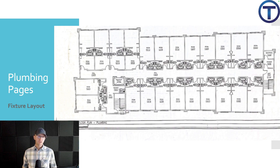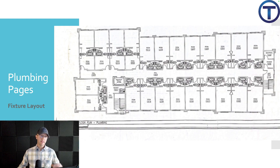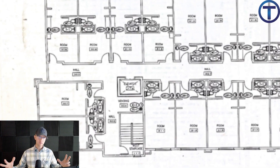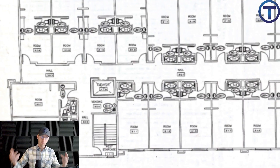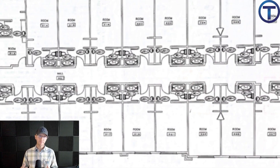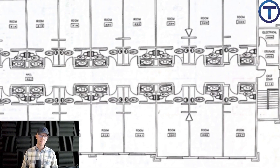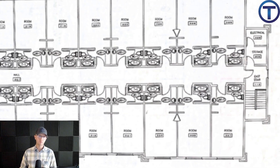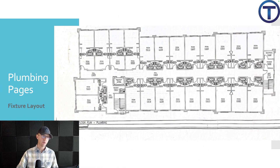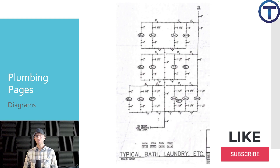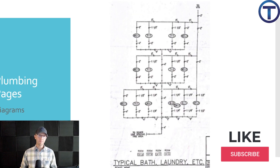Here we have a fixture layout page of a plumbing plan from a hotel. It gives you the layout of the room — a plan view like you'd see on architectural pages — but they've pulled off all the measurements. What they have are all of the fixtures: toilet, tub, and lavatory for each hotel room, along with a detail of which specific toilet, tub, or lavatory you're supposed to use.